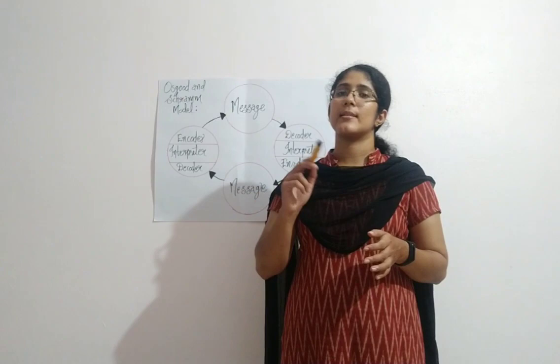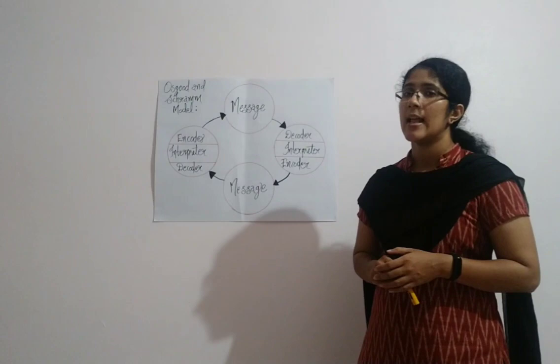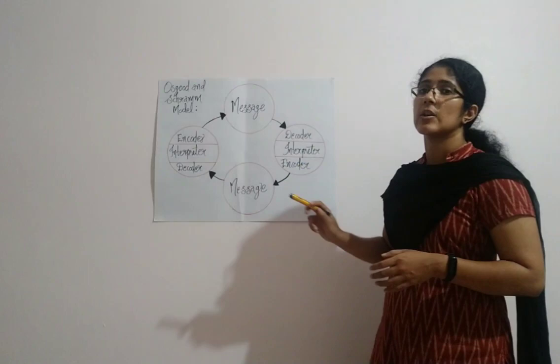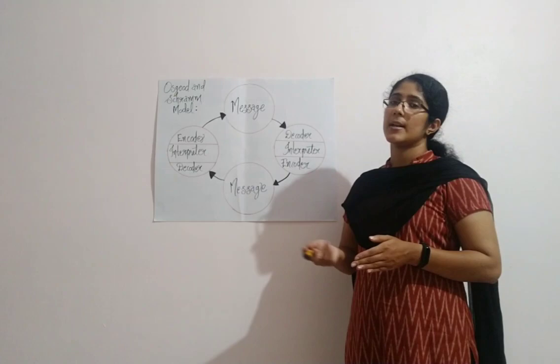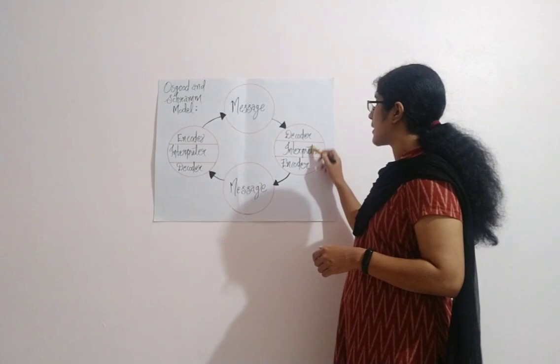There are mainly three functions for this model of communication: encoder, decoder, and interpreter. The encoder is one who sends a message. The decoder is one who receives a message. And the interpreter is one who interprets or understands the message. These are the three functions of the Osgood and Schramm model of communication.